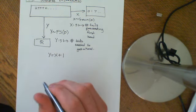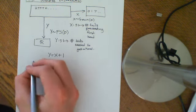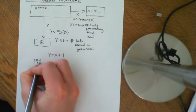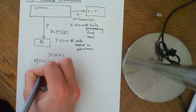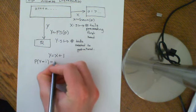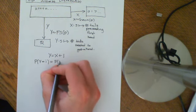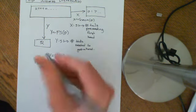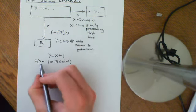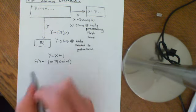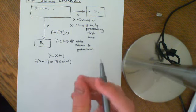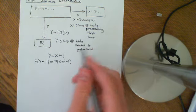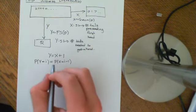So the probability that Y equals i is going to be the same as the probability that X equals i minus 1. That just follows from the fact that if Y equals i, that means you get your head on the i-th flip, which means you get i minus 1 tails first. So the probabilities have to obviously be the same.